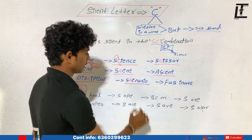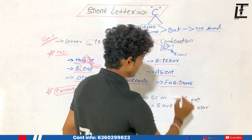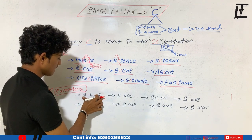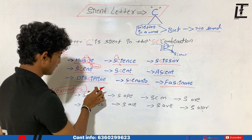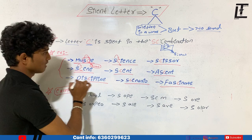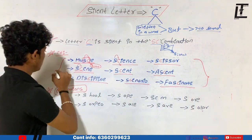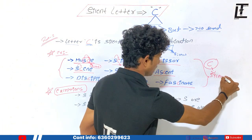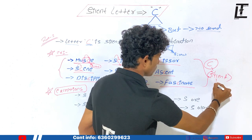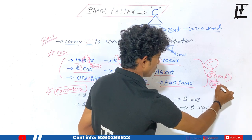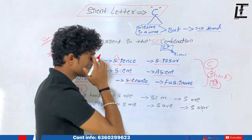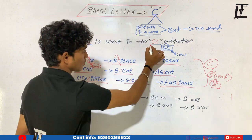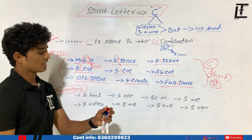Here we have 'scenario', the word 'fascinate', and 'voice'. In all these words, letter C is silent. Why? Because it is in the SC combination, or it comes after the S. So this is what rule number one says: whenever C is in the SC combination, it is considered a silent letter.